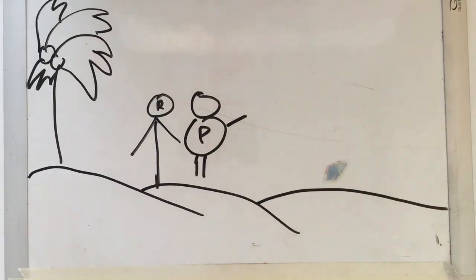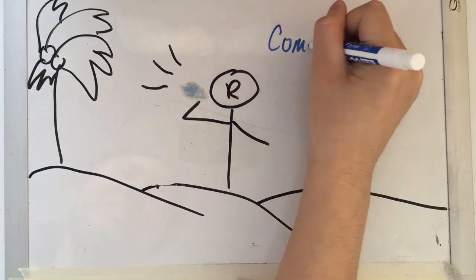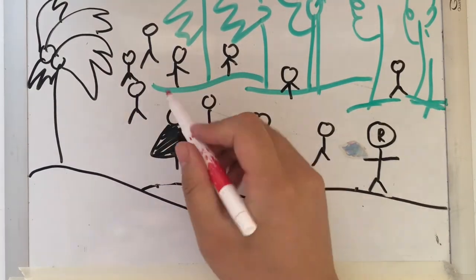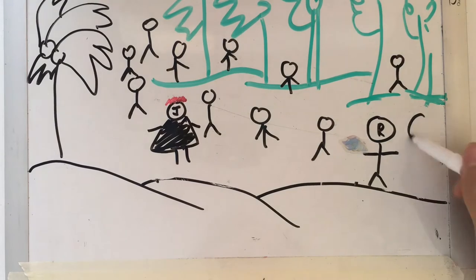They find a conch shell and Ralph blows into it. The sound calls out to all the boys, including Jack, a red-haired leader of a choir out of the jungle. The only survivors are a group of boys between the ages of 6 and 12.